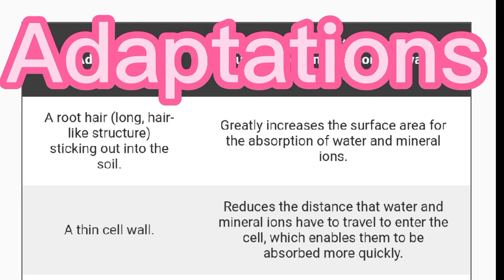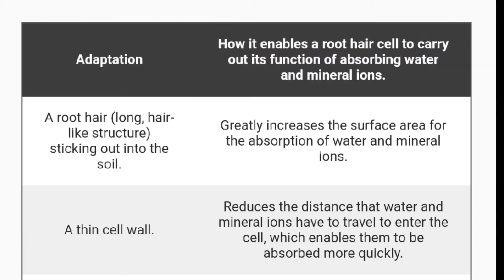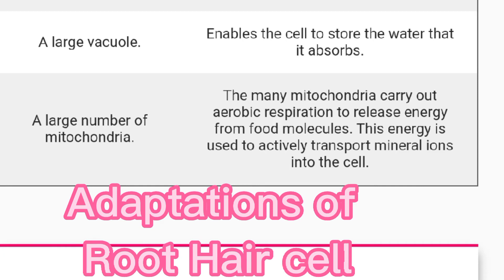Root hair cells have a thin cell wall and there are intercellular spaces as well. This reduces the distance that water and minerals have to travel to enter inside the cytoplasm. The thin wall helps to absorb water and minerals efficiently. The large vacuole present in root hair cells helps to retain water and salts.